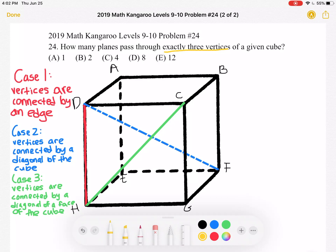So as you can see on the side I've labeled the cases starting with case one where you have two vertices connected by an edge of the cube and an example is dh.